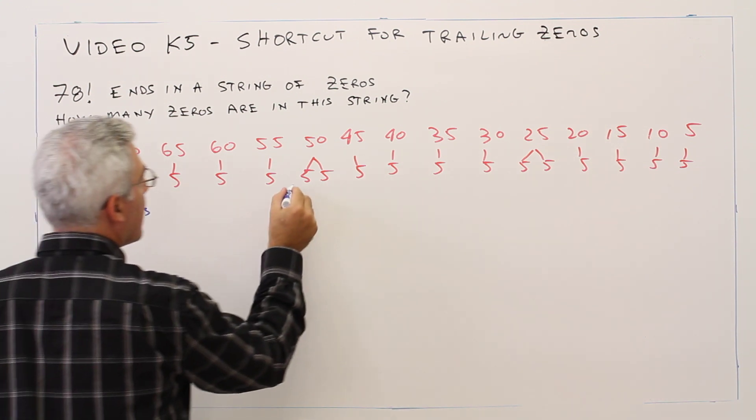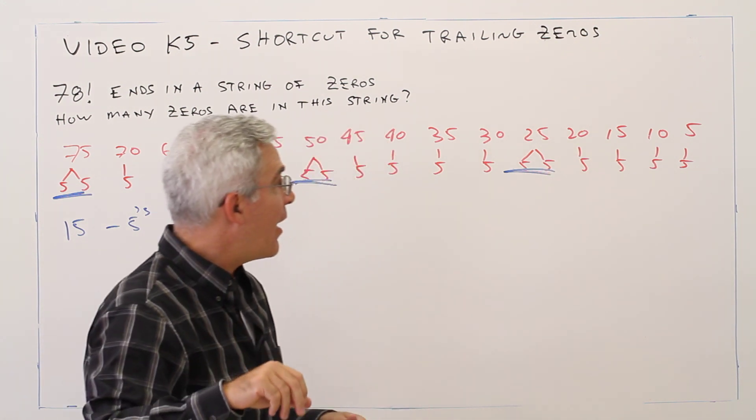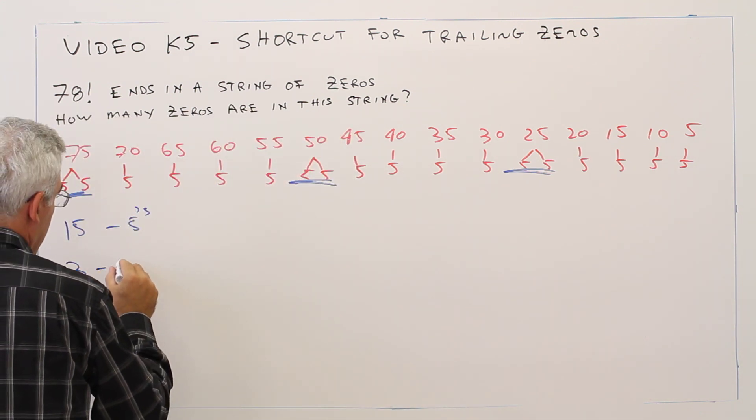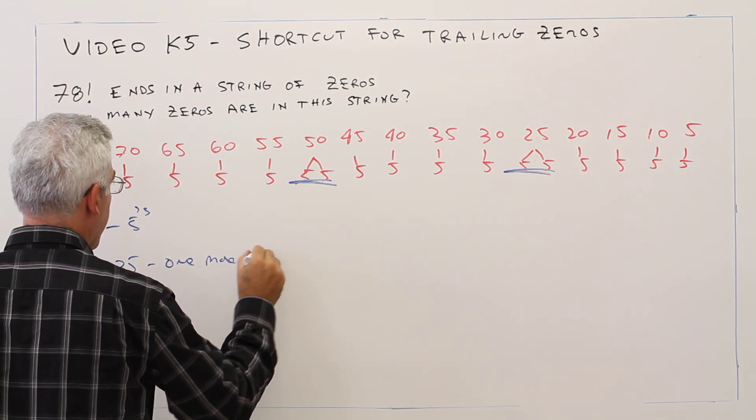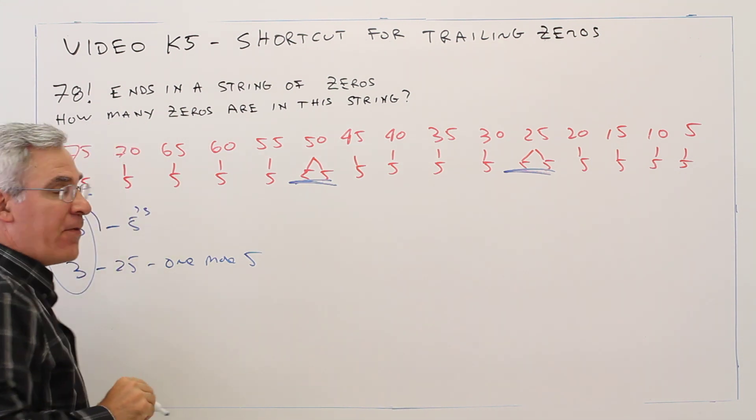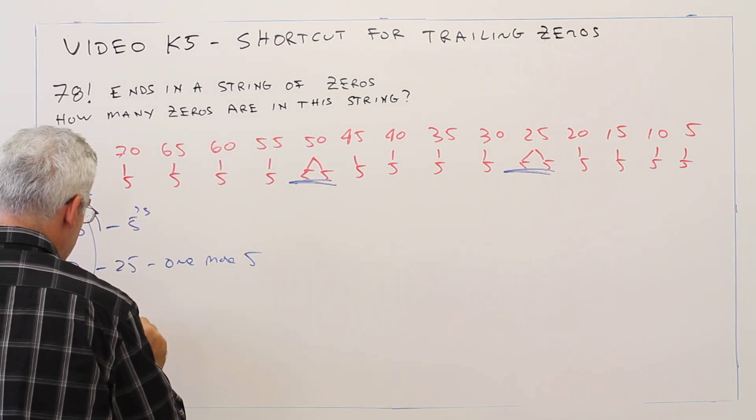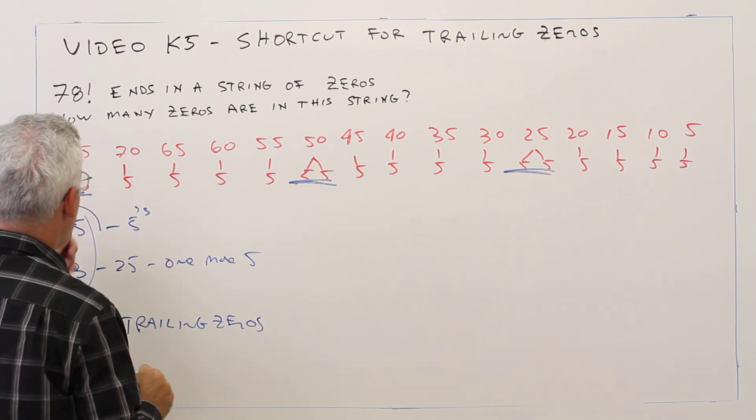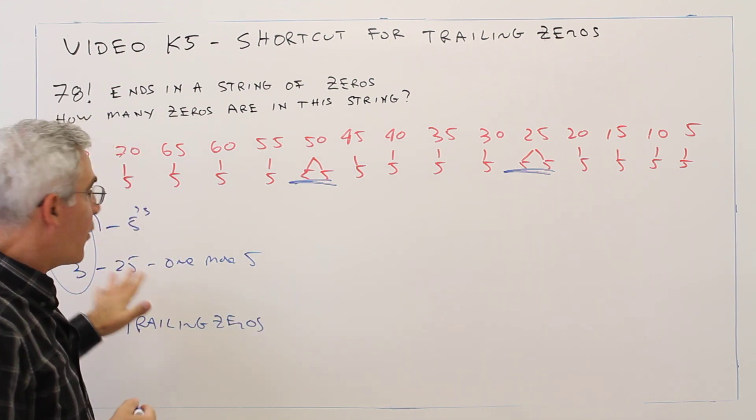Then I had 3 which were divisible by 25 and they had 1 more factor of 5. So 15 plus 3 makes a total of 18. So that's how to do it the way that I showed you before, just counting out and seeing what's going on.